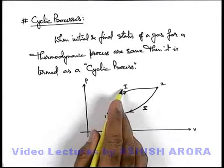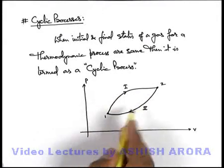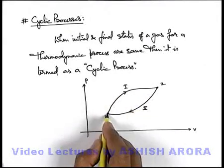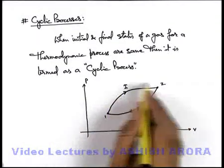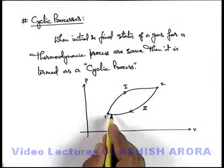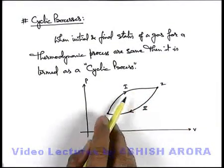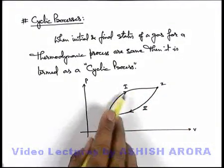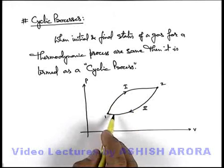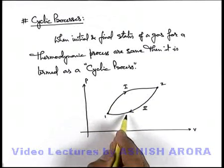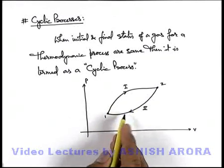After carrying out both processes 1 and 2, the gas is in its initial state. So this complete process, which consists of both paths 1 and 2, is termed as a cyclic process.